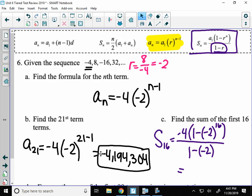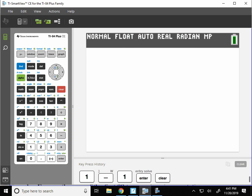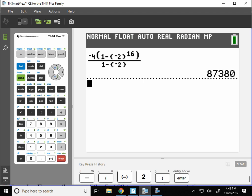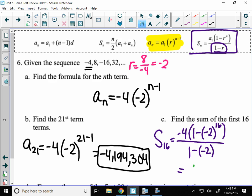Then you just type that in your calculator. So very carefully, let's type that in. So I'll make a fraction. So negative 4 times 1 minus parentheses, negative 2 to the 16th. Close your upper parentheses. The denominator is 1 minus negative 2. And that would be the sum. The reason it is smaller, I'll talk about this once I write it down.